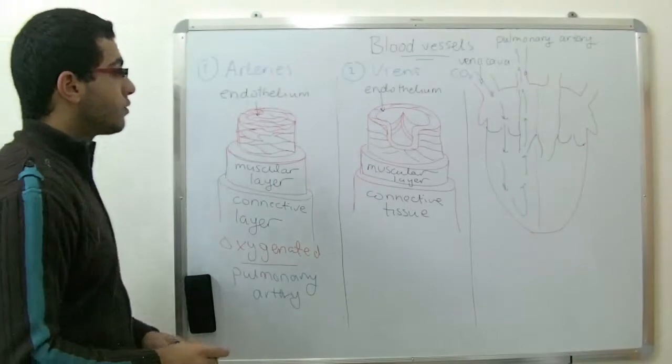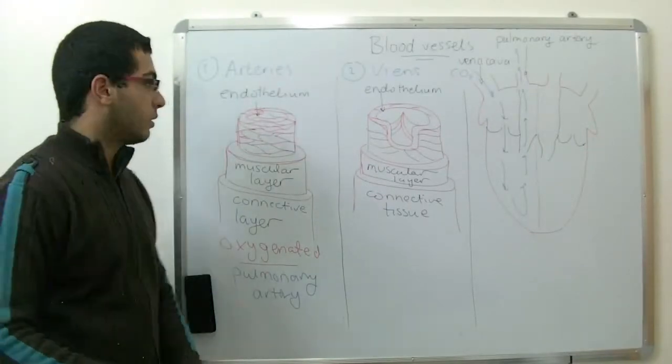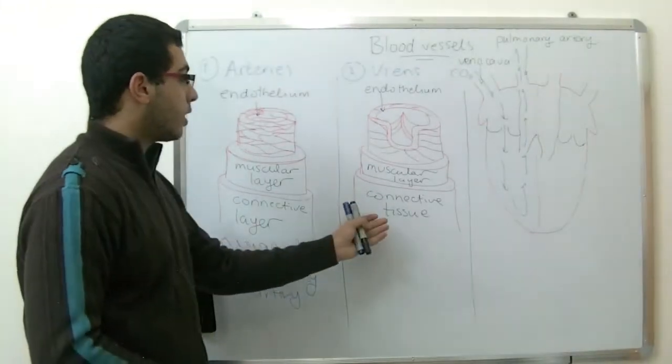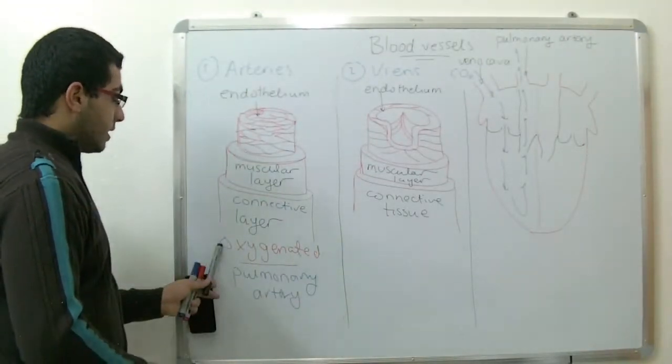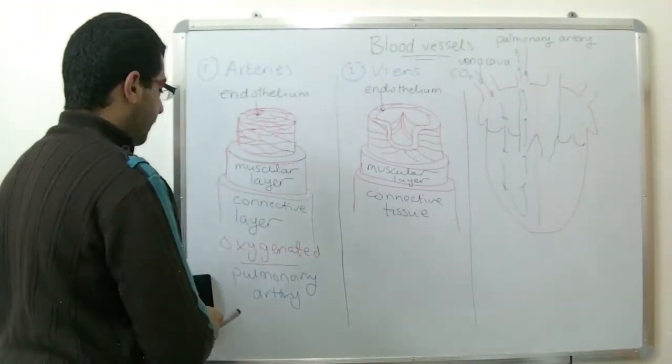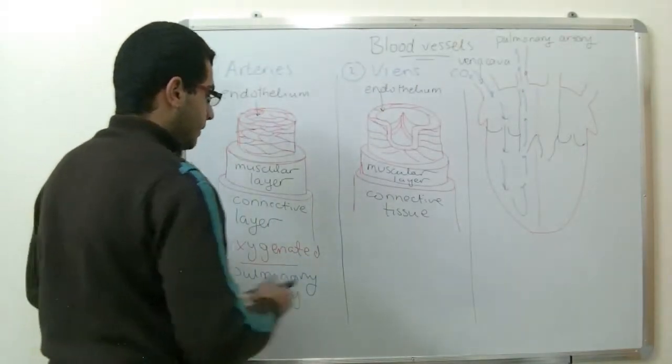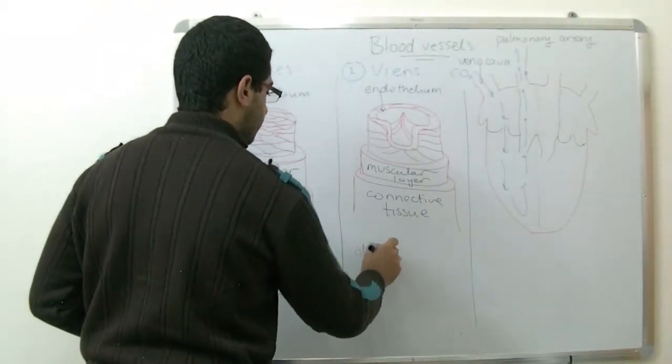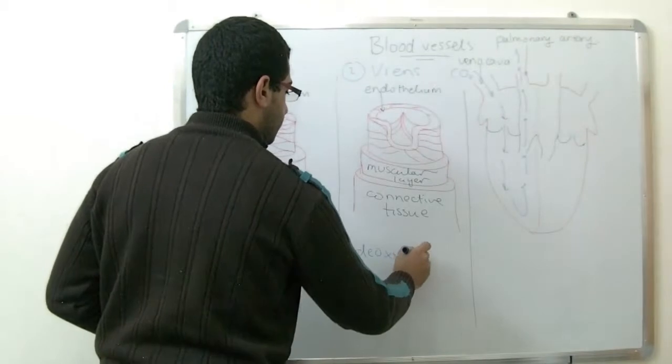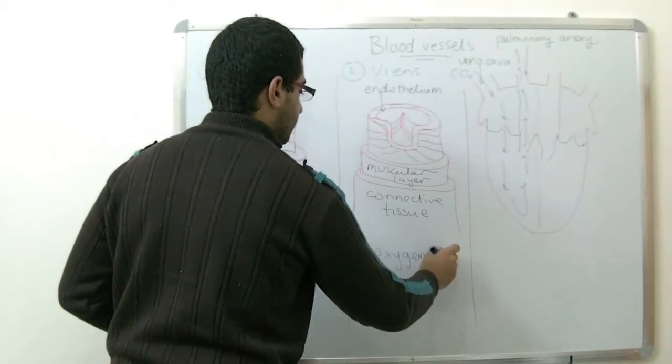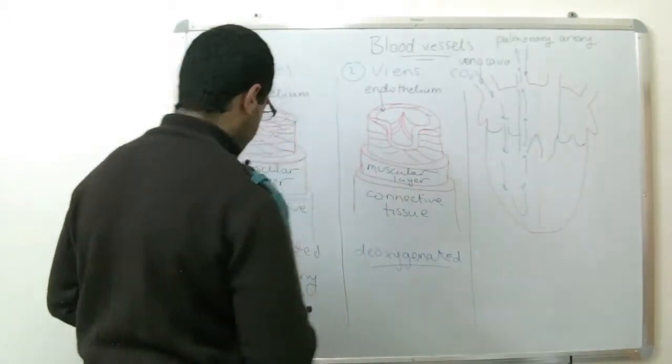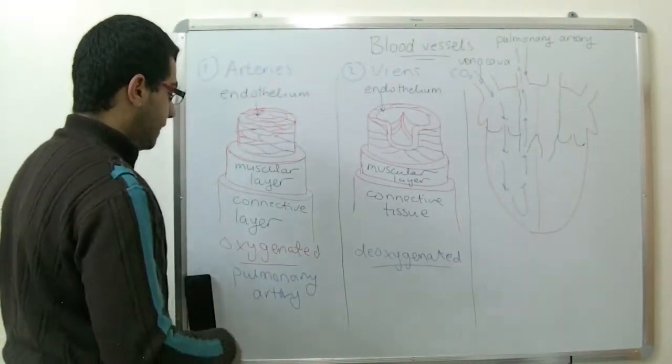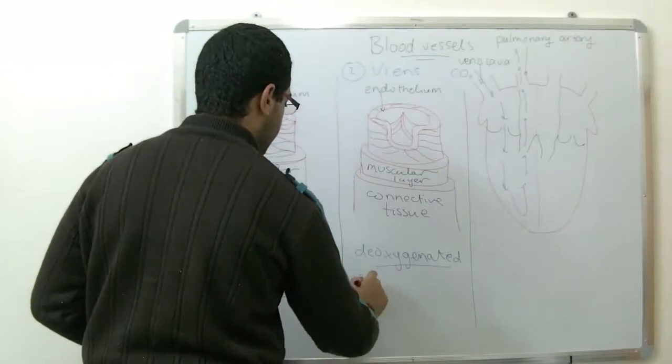The arteries are usually buried under the body muscles, while the veins are abundant everywhere in the body. Also, the veins carry the deoxygenated blood, except only one vein, which is the pulmonary vein.